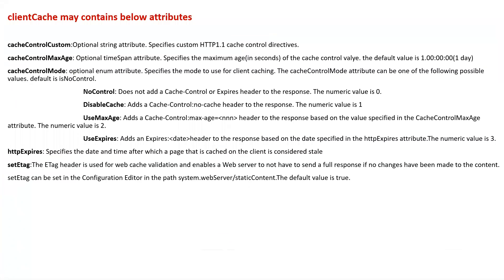Hope this clears how to add client cache and how to specify which kind of file is going to be cached based on the location path. Hope this clarifies how to cache and how to specify the path in the web.config so the browser can cache and send the response with the specified header to the browser. Thank you.